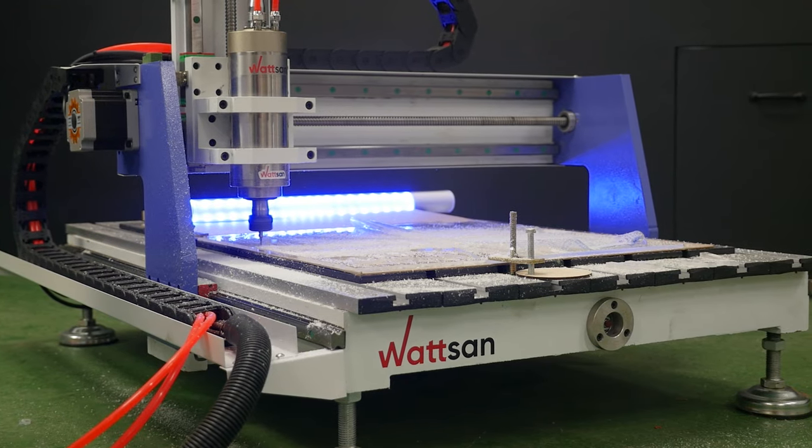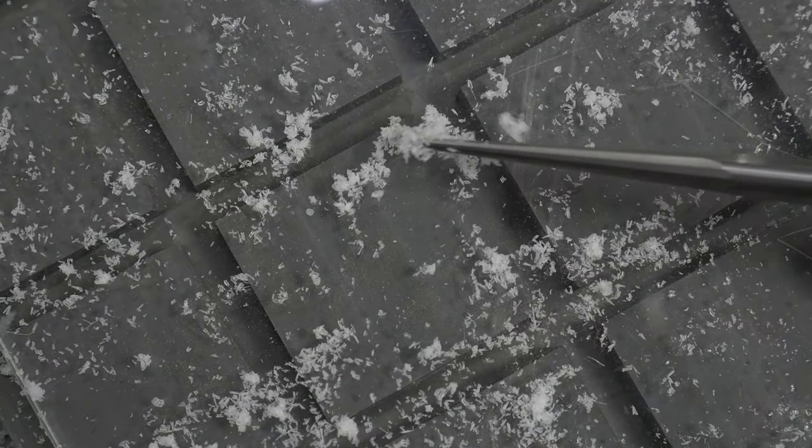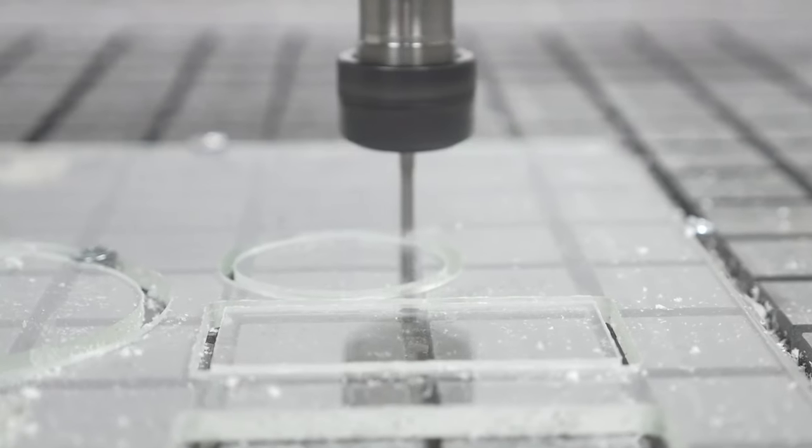When processing plexiglass, please note, the edge must be straight and free of chips. The material edge should be thin, friable, and not melt.